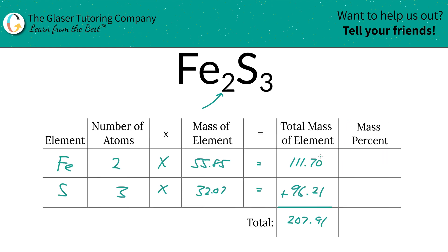So to find the mass percent of iron, we're simply going to take the total mass of that iron, 111.7, and divide it by the total mass of the entire compound, 207.91, and then multiply it by 100. This is a simple percent calculation: part over whole times 100.